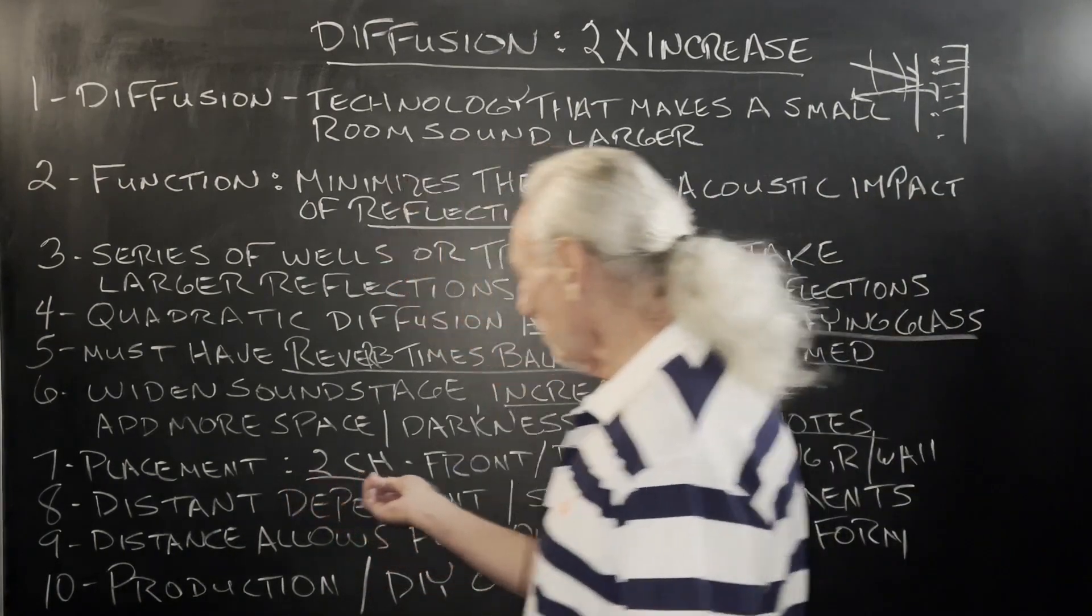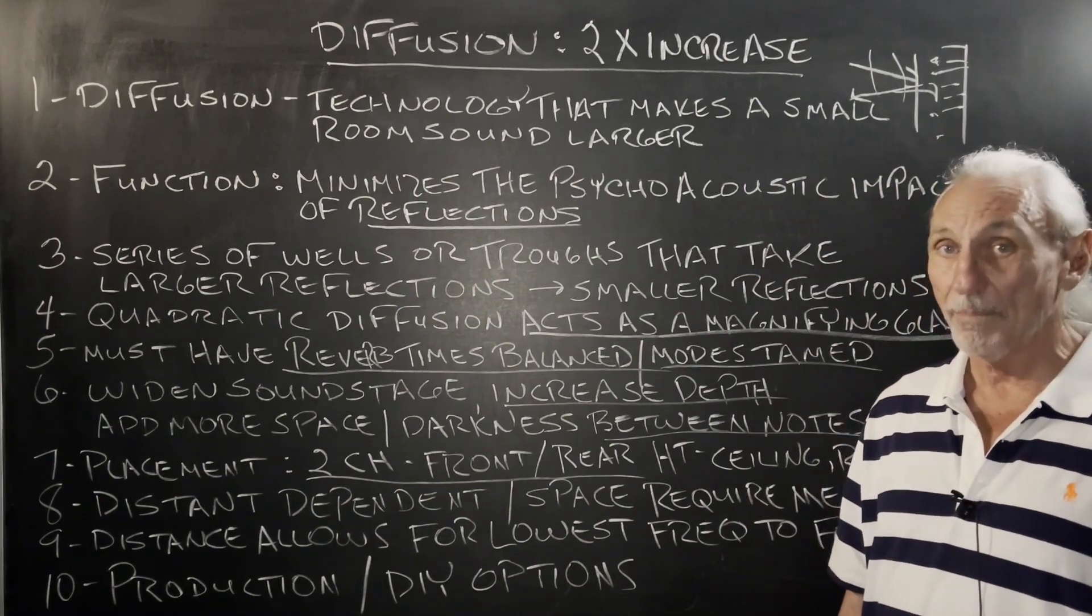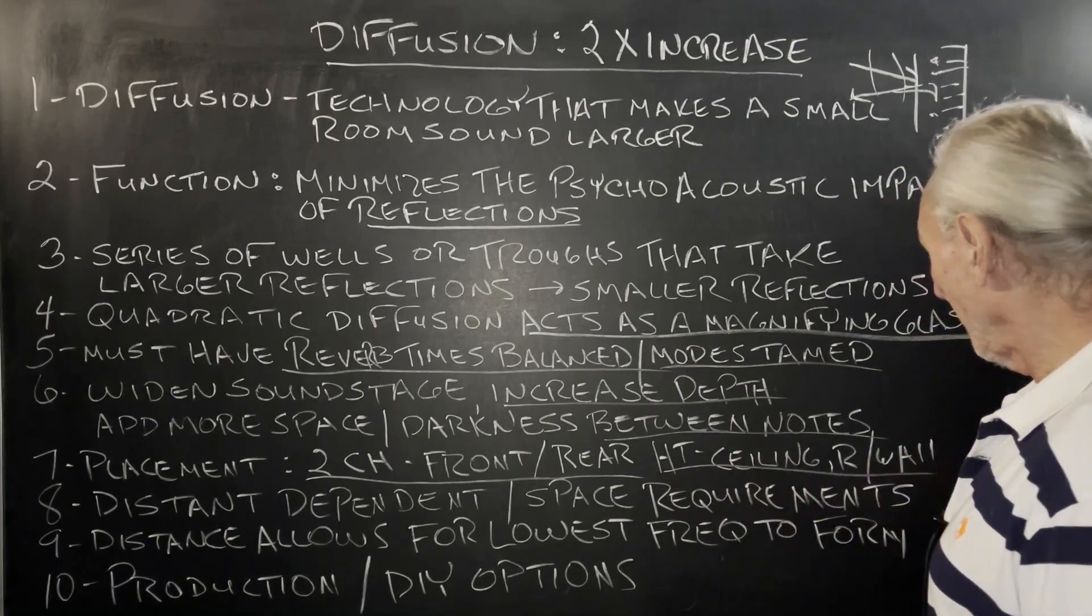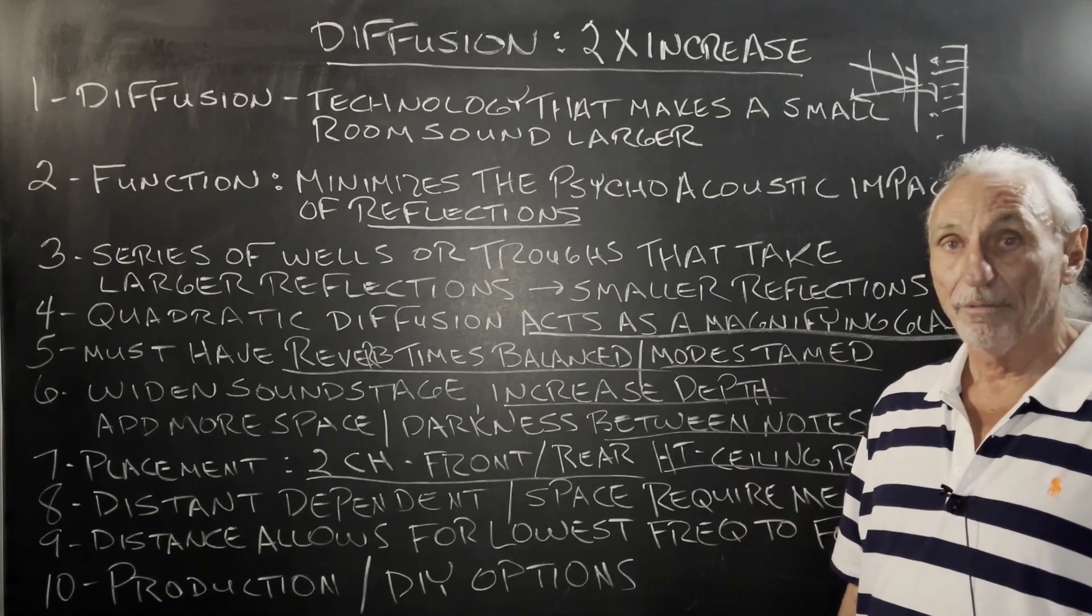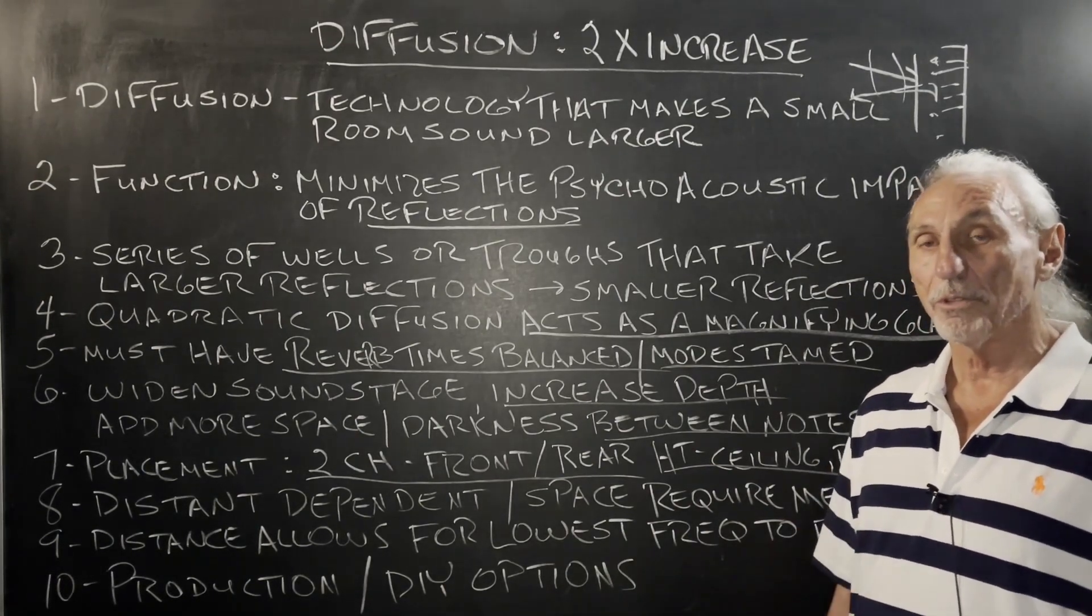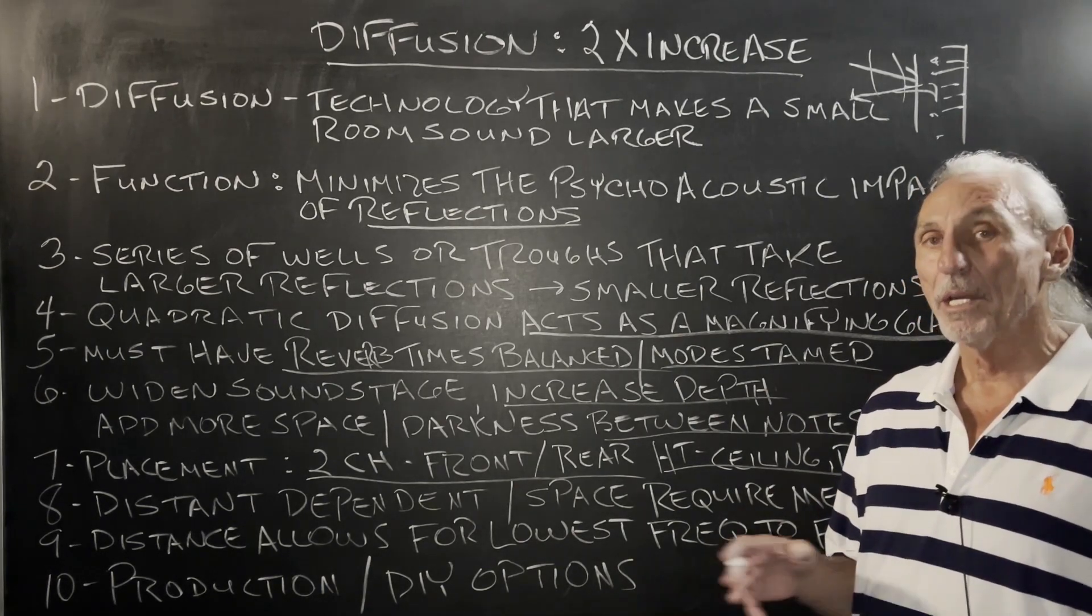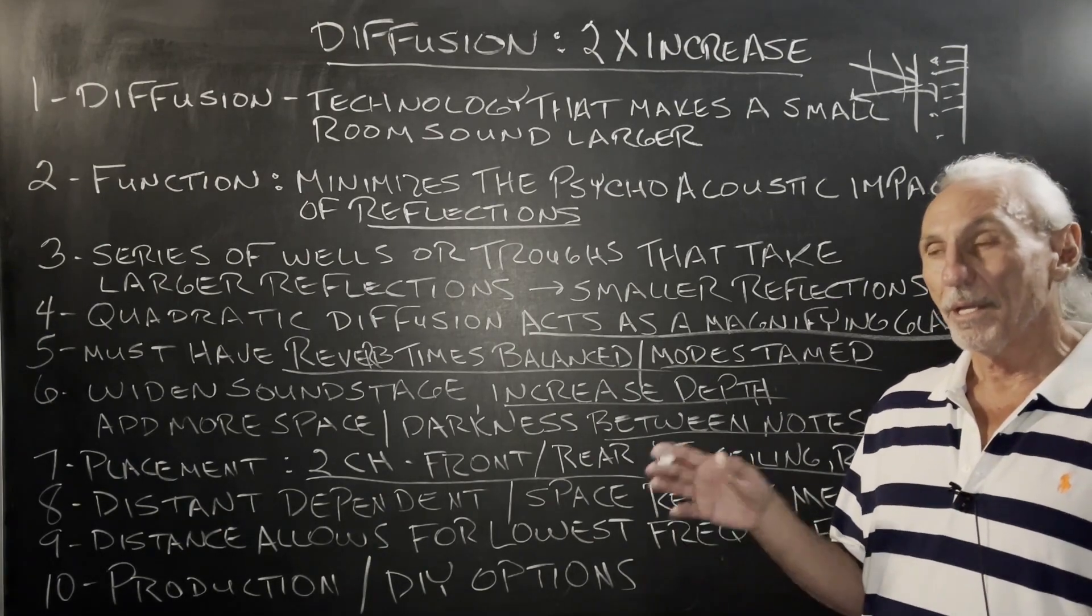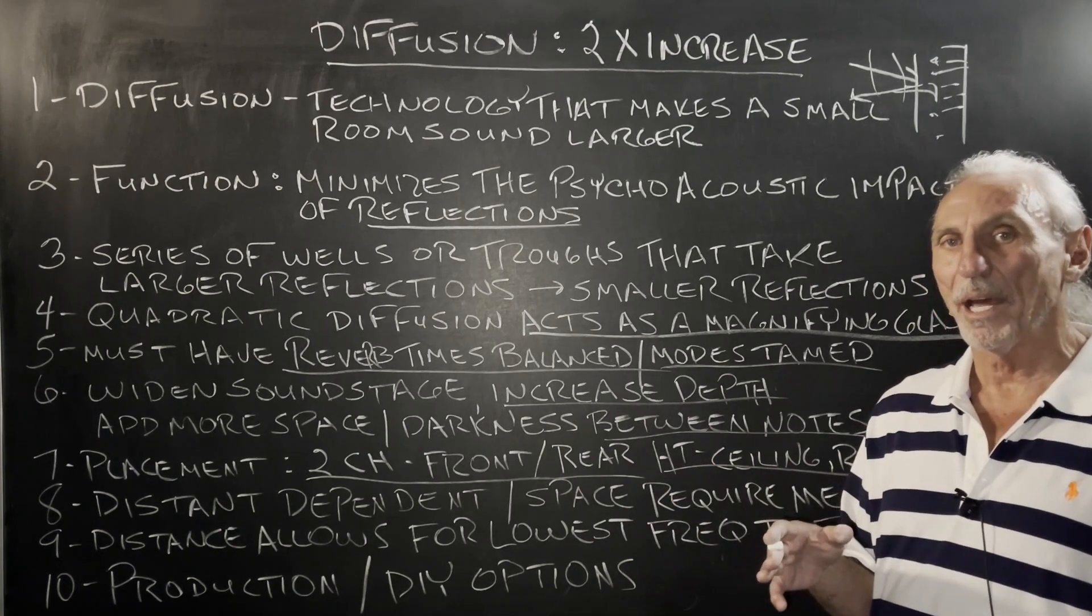Placement depends on usage. So two channel, we like front and rear wall. Ceiling, sometimes depending on the height of your speakers. And home theater, we like ceiling and rear wall. Those are the two that we do a lot of. And that seems to work out the best. People say, well, why don't you put diffusion on the sidewalls? The reason we don't use diffusion on the sidewalls is because sidewall reflections provide that center image focus. And diffusion will have an impact on that that we don't particularly like.